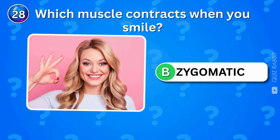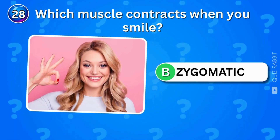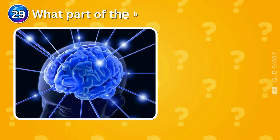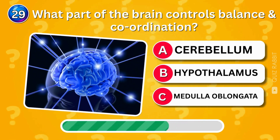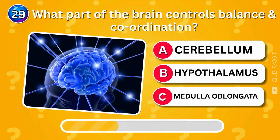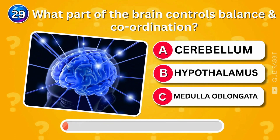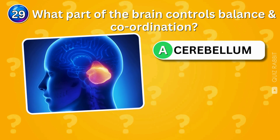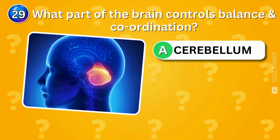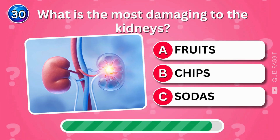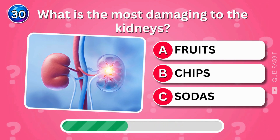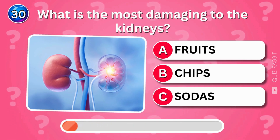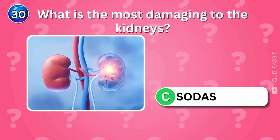Which muscle contracts when you smile? The zygomaticus major contracts when you smile — that's the muscle behind your happiest moments. Which part of the brain controls balance and coordination? The cerebellum controls balance and coordination, keeping you steady and graceful. What is most damaging to the kidneys? Sodas can be harmful to the kidneys.